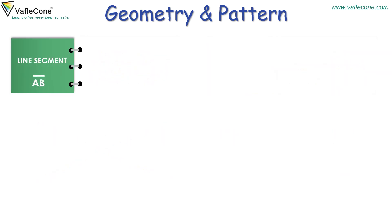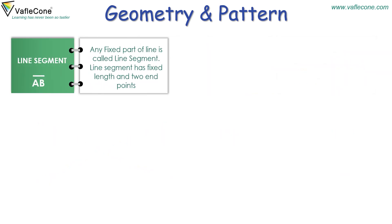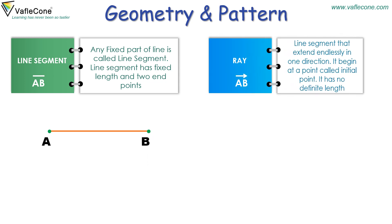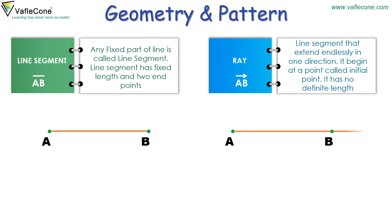Line segment: any fixed part of a line is called a line segment. A line segment has a fixed length and two end points — here the two end points are A and B. Ray: a ray is a line segment that extends endlessly in one direction. It begins at a point called the initial point and has no definite length.